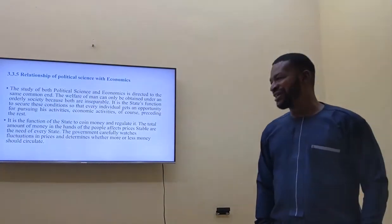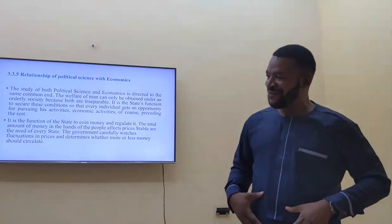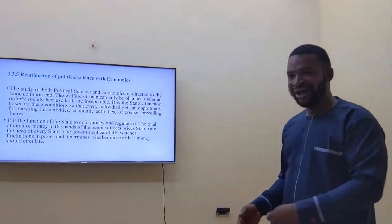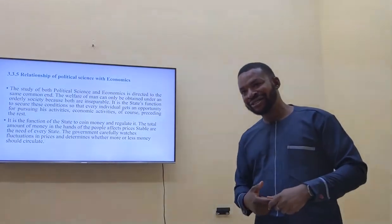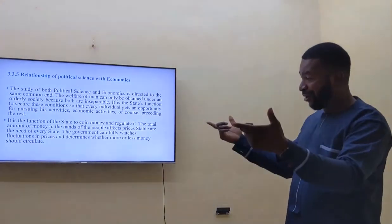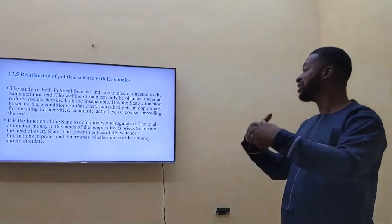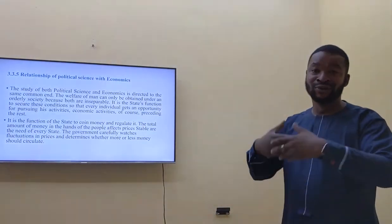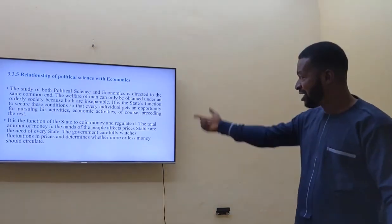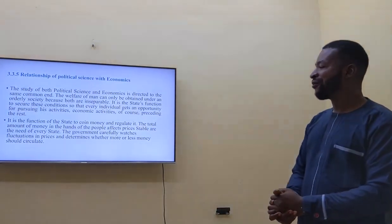Political science is related to economics in the sense that economics looks at the survival of man from the economic angle. Political science is about how to acquire power, make decisions, allocate values, and use resources. When we talk about allocation of resources, economics comes in — so both of them are related.